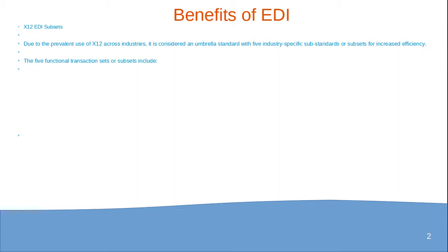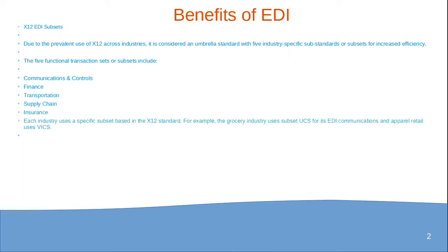Due to the prevalent use of X12 across industries, it is considered the umbrella standard with five industry-specific subsets for increased efficiency. The five functional transaction set subsets include: communications and controls, finance, transportation, supply chain, and insurance.